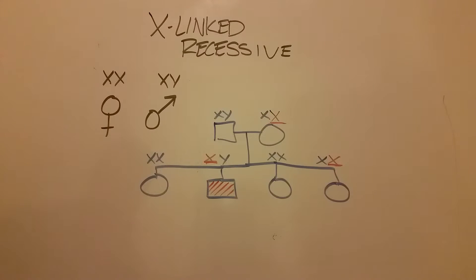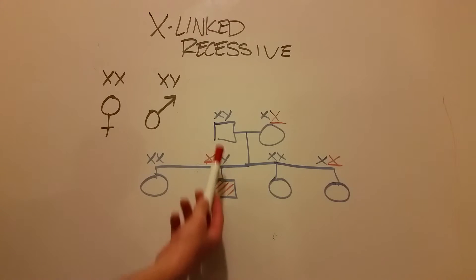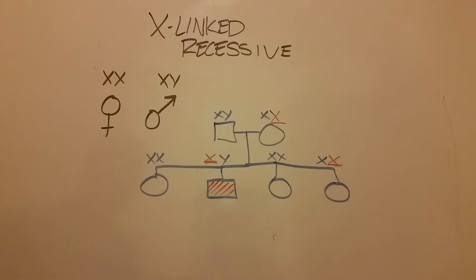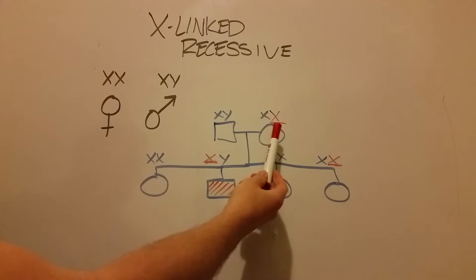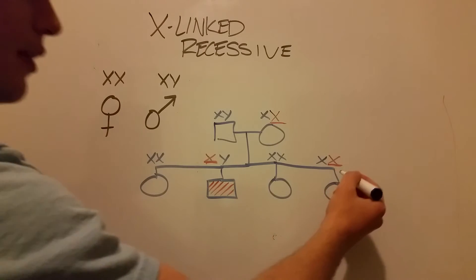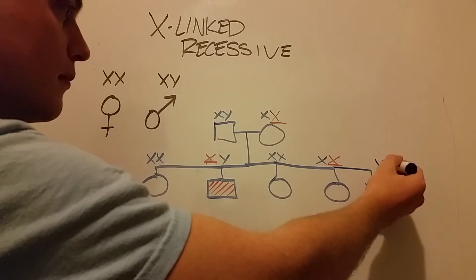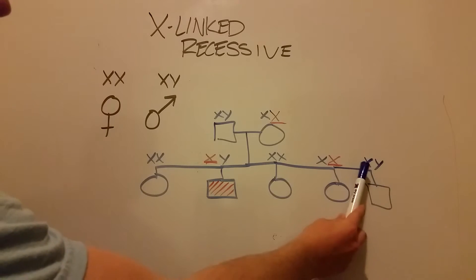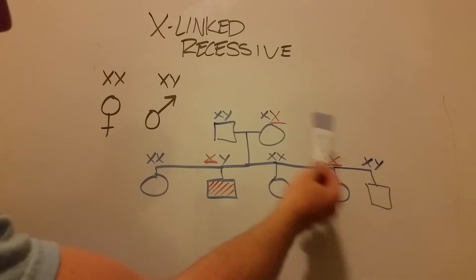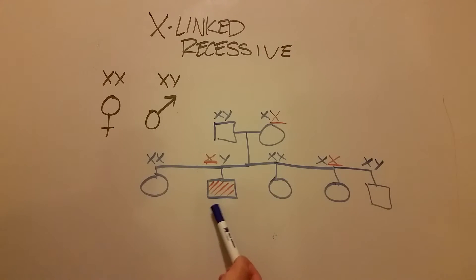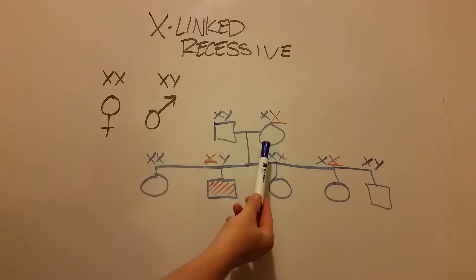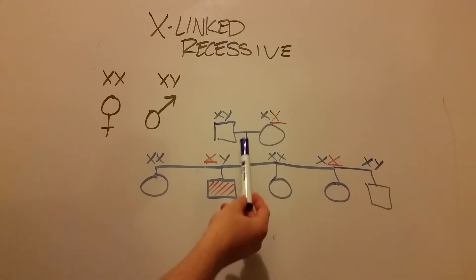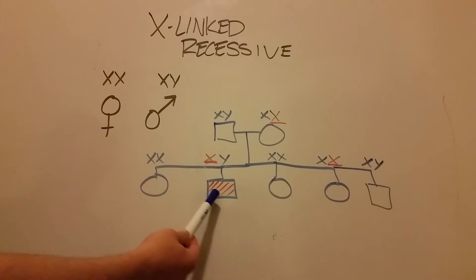When these two have a child, any males they have can only get their Y chromosome from their father, which means it's a toss-up whether that male will receive the wild-type X or the recessive X from his mother. I'll draw one more male here. This male received the wild-type X from his mother and Y from his father, so he's unaffected. Whereas this male is affected by hemophilia because he received the Y from his father and the affected X from his mother. So although everyone in his family — his four siblings and two parents — don't have hemophilia, he does.